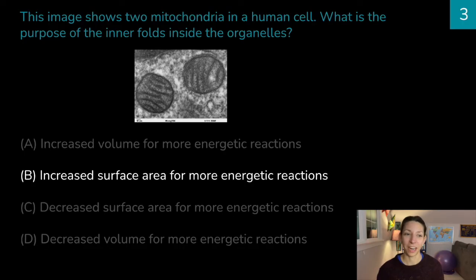Answer is increased surface area for more energetic reactions. You guys are probably getting a hang of the theme by now. So remember, mitochondria, the powerhouse of the cell, are where our cellular respiration reactions occur. And along those inner folds of the mitochondria, we have proteins embedded. That is where we can establish proton gradients. We can get these reactions to happen that will generate ATP for the cells. So the more surface area, the more locations we have for that, and the more energetic reactions we can have within the organelle.